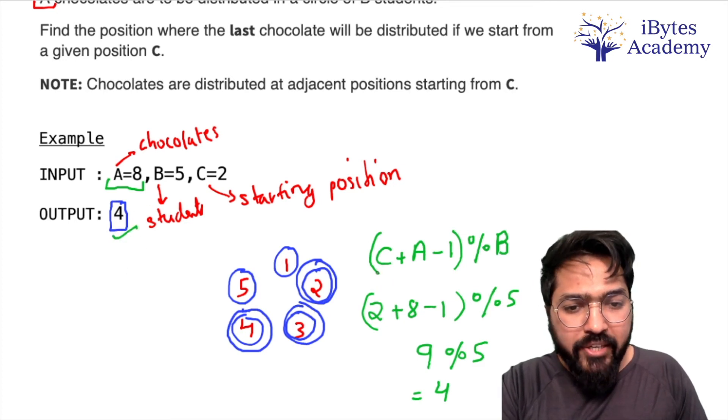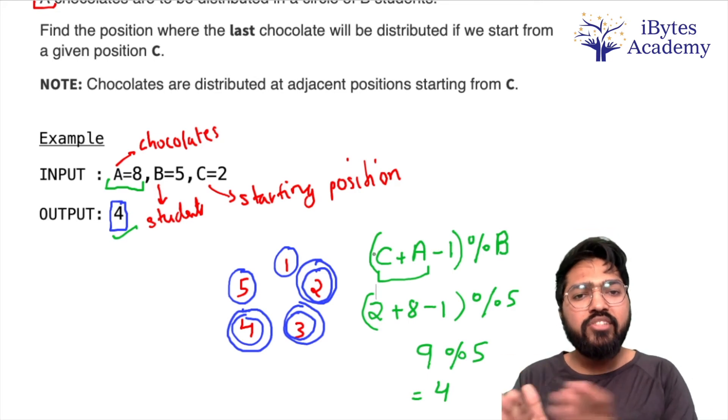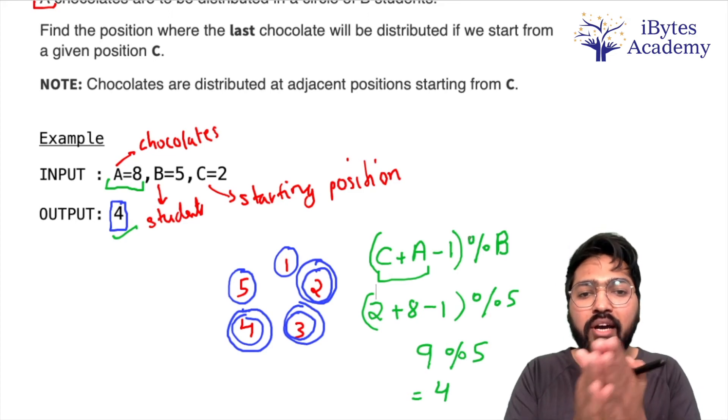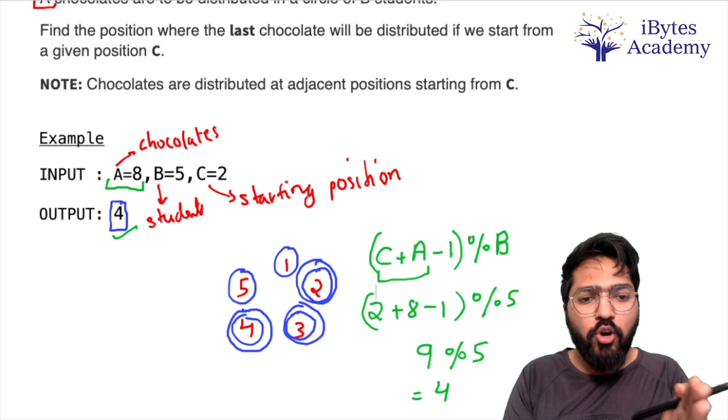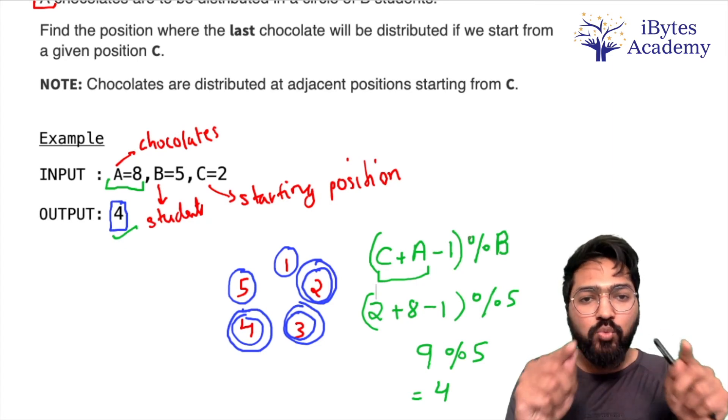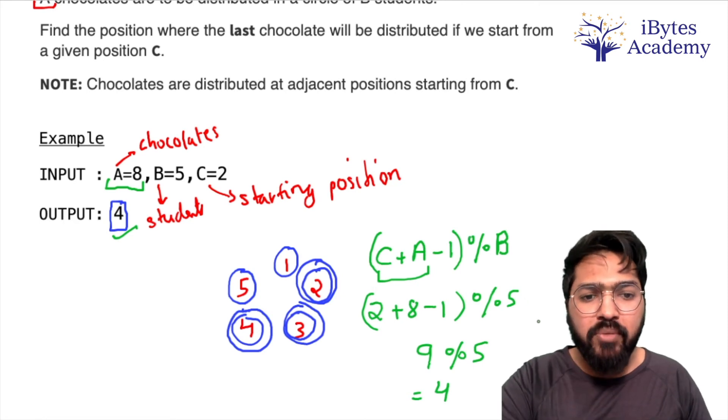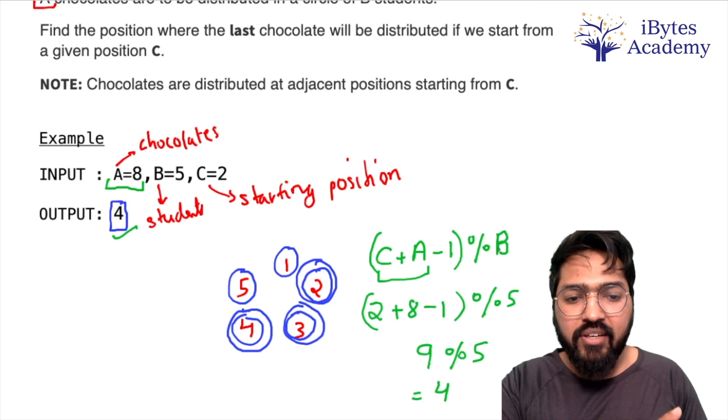So basically hum log bol rahe hain ki C plus A, yeh maanlo yaar ki wo circle mein nahi saare straight line mein hai. Aur minus 1 kyun kar rahe hain? Minus 1 isliye kar rahe hain because pehli chocolate current bande ko ja rahi hai, hum log aage nahi badh rahe hain pehli chocolate pe. To 4 hamare paas aa jayega.